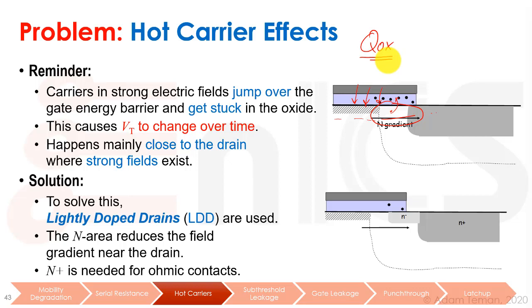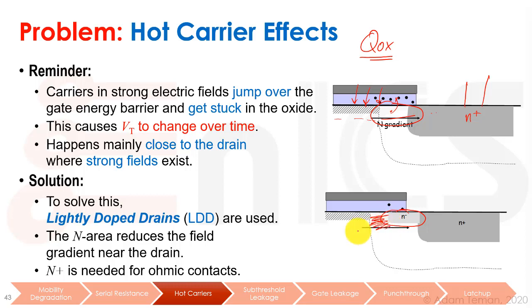The solution to hot carrier effects is the LDD — a lightly doped drain. The strength of the field in our depletion region is caused by the N+ material, which is required for a good ohmic contact. But we put a lightly doped drain — some N-minus — so the depletion region is much smaller with a much smaller field. The energy that electrons gain in this area is much lower, giving a much lower probability of electrons jumping over the energy barrier into the oxide.